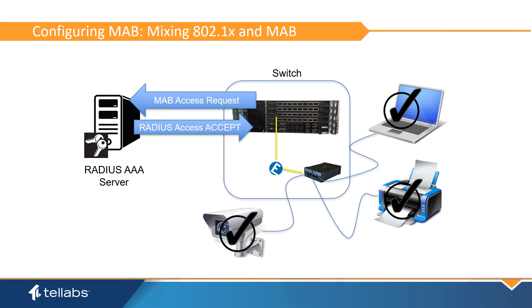An entire site can be configured this way to allow 802.1x or MAB devices to be plugged into any port on the OLT. This can also be used, for example, to authenticate phones that don't support 802.1x but force PCs to authenticate. It should be noted that if multiple devices are attempting access on the same port, the 802.1x supplicants will always be given preference over MAB clients. Given the ease of MAC spoofing, it is best to only enable MAB on ports that require it.